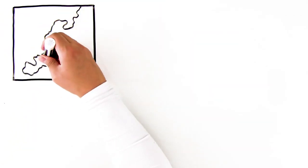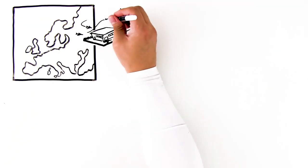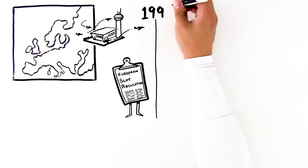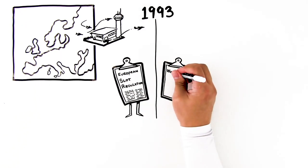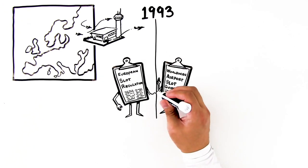Since half the world's slot-coordinated airports are in Europe, let's look at the European story more closely. The European slot regulation was brought in in 1993 to mirror the WASG. Since then, it has been a story of more choice, more competition, and greater efficiency.